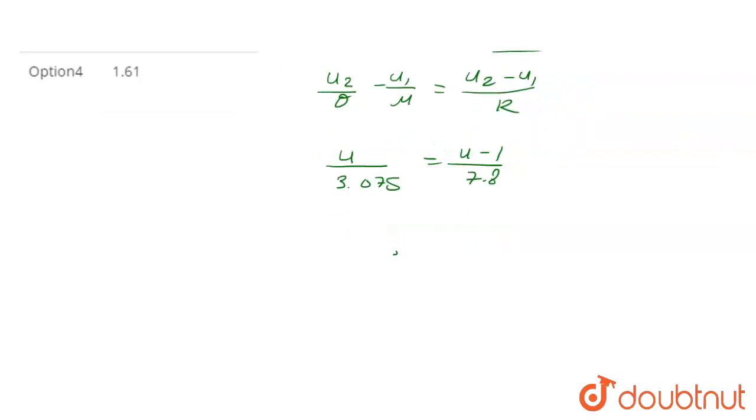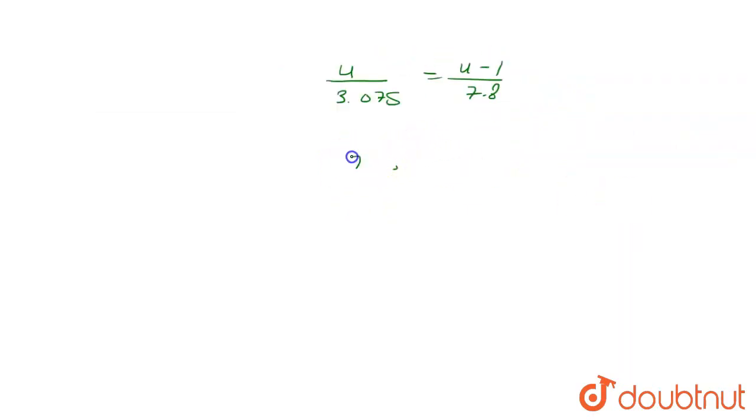Let's solve by cross multiplying: 7.8 mu equals 30.75 mu minus 30.75. So mu equals 30.75 upon 22.95, which equals 1.34. That is the answer.